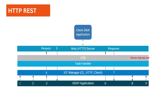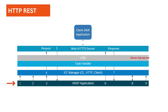Now let's look at the client-side architecture of ICF. In an outbound scenario, the ABAP application is trying to communicate with a Java application. The ABAP application makes a request to ICF, from there it goes to the task handler, then to ICM, and finally the Internet Communication Manager forwards the request to the external application.